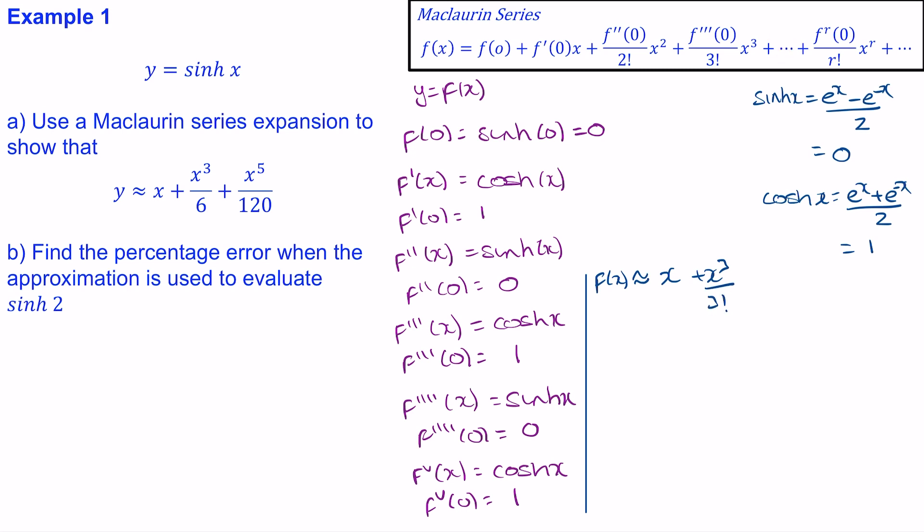The fourth derivative is 0 and the fifth again is 1, so plus x^5 over 5 factorial. We can simplify this even further. So the function of x is approximated as x plus x^3—and 3 factorial is 3 times 2 times 1, so over 6—and then we have x^5 over 5 factorial which is 120.